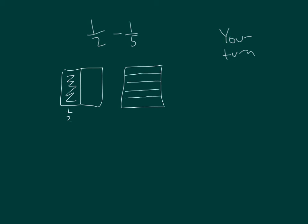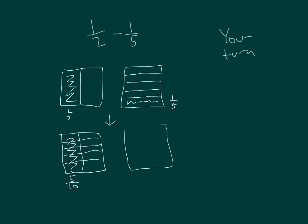And then we also have 1 fifth, making equivalent fractions. Looks like we get some tenths. 1 half first, 5 equal parts, so we got 5 tenths. And for 1 fifth, 2 parts to get 2 tenths.